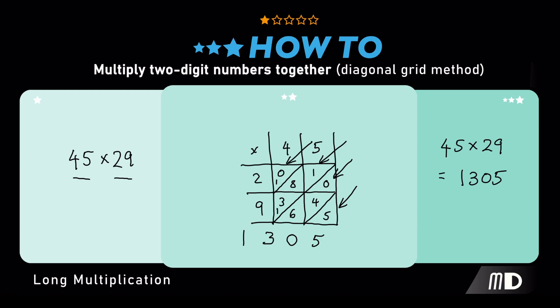You might like that grid method more than the other. You might like the other more than you like that one. The beauty of long multiplication is you can choose the method that you find the easiest. So, it's up to you which one you choose.